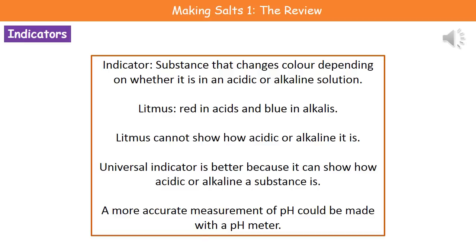One example is litmus, and litmus will go red in acids and blue in alkalis. One thing that litmus can't do though is tell us how strong the acid or the alkali actually is — it simply says this is an acid or it's an alkaline. One thing we can use that will give us a much clearer indication is universal indicator, which is better than litmus.